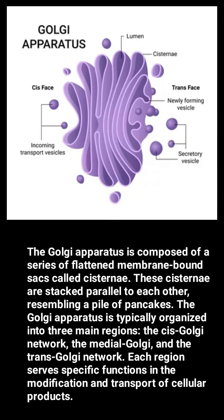The Golgi apparatus is typically organized into three main regions: the cis-Golgi network, the medial Golgi, and the trans-Golgi network. Each region serves specific functions in the modification and transport of cellular products.